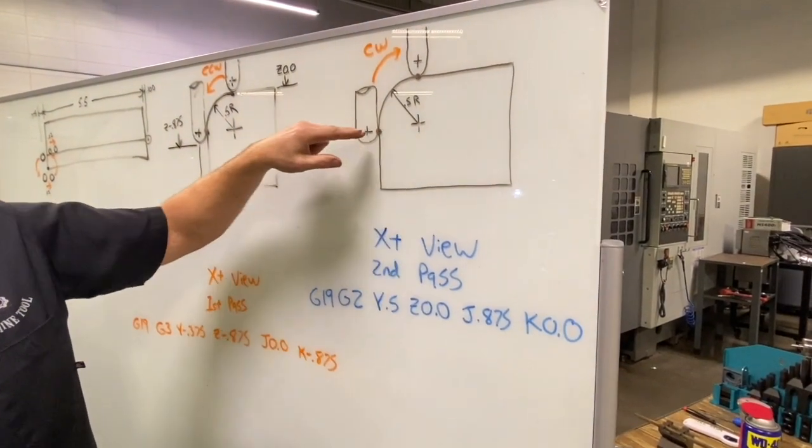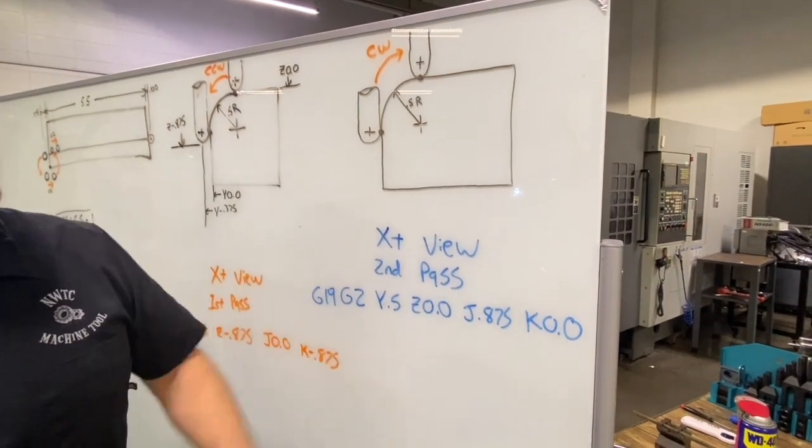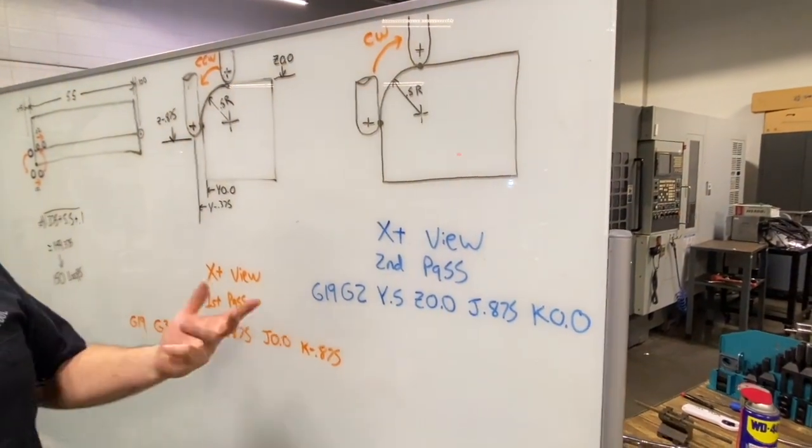And then our Z vector is essentially zero, so K zero.